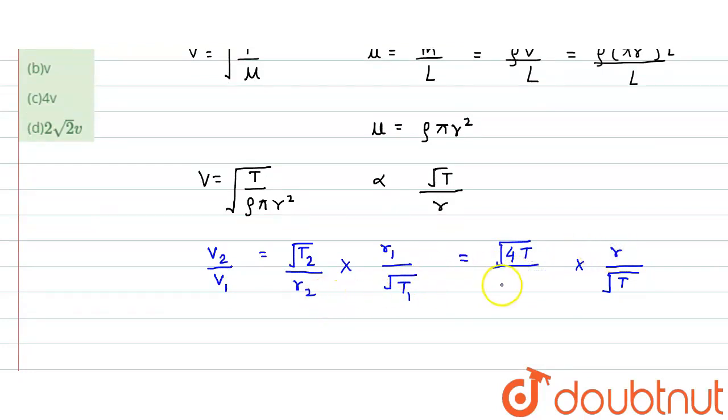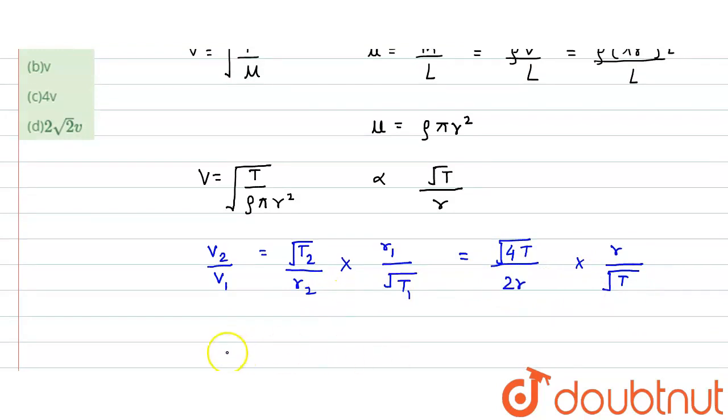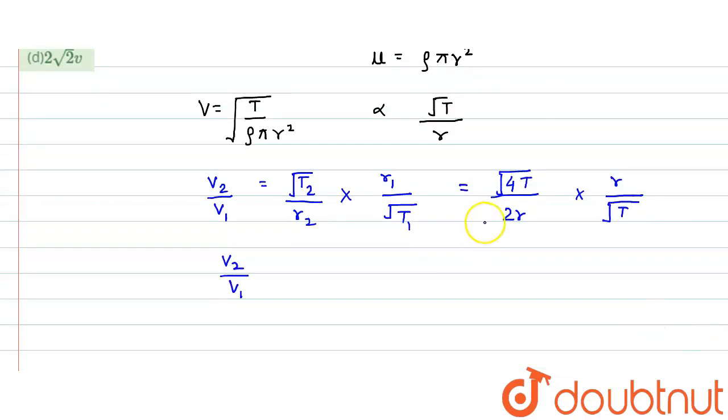So v₂ divided by v₁, what would be the value? r and r would be cancelled, square root T and square root T would be cancelled, and the value of square root 4 is 2 divided by 2.